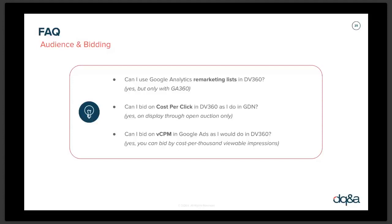Can I bid on vCPM in Google Ads as I would in DV360? Yes, you can bid by cost per thousand viewable impressions. This is especially interesting for prospecting campaigns if you want more focus on viewability — it's definitely something you can play around with.